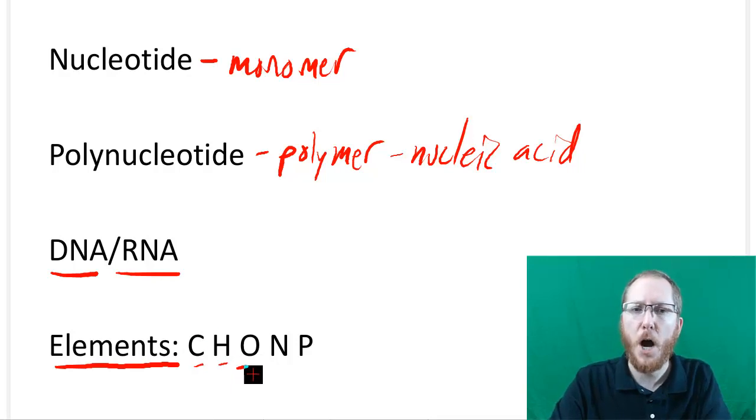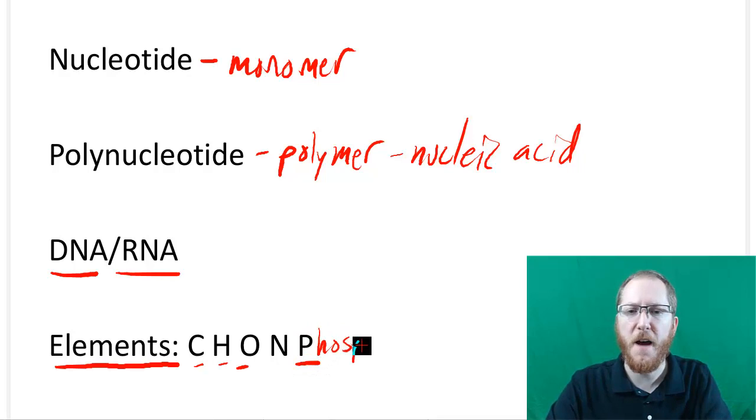Carbs and lipids typically only have these guys. We talked about nitrogen also being found in proteins. But proteins tended to have sulfur. We won't have sulfur in nucleic acids. Instead, we're going to have phosphorus.